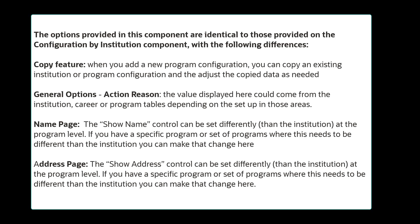On the Name page, the show name control can be set differently than the institution at the program level. If you have a specific program or set of programs where this needs to be different than the institution, you can make that change here. On the Address page, the show address control can also be set differently than the institution at the program level. If you have a specific program or set of programs where this needs to be different than the institution, you can make that change here.